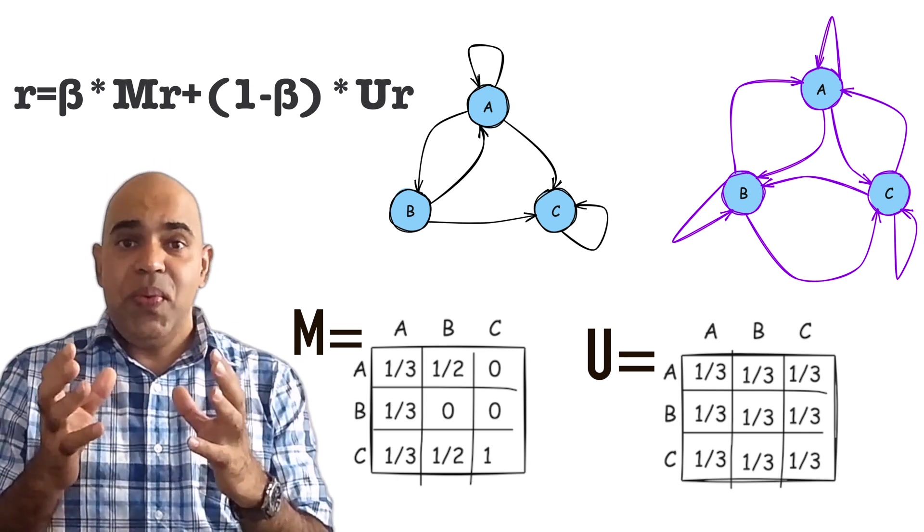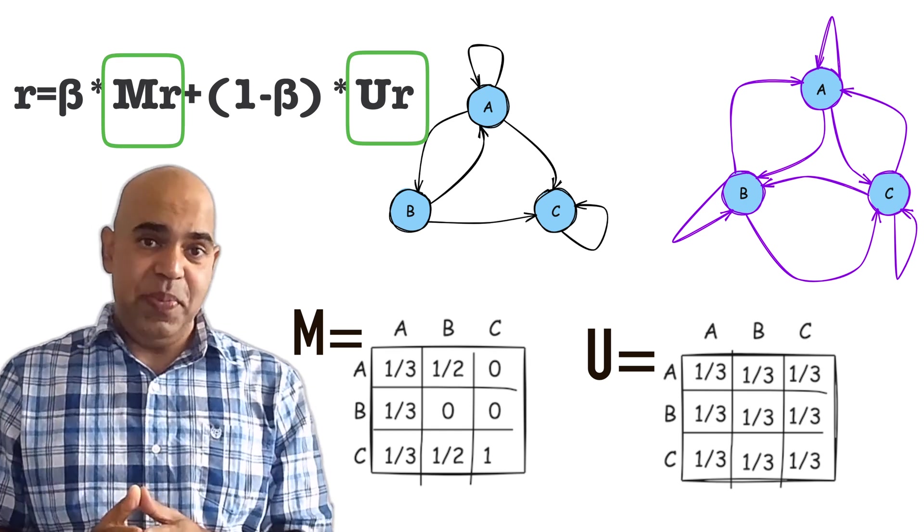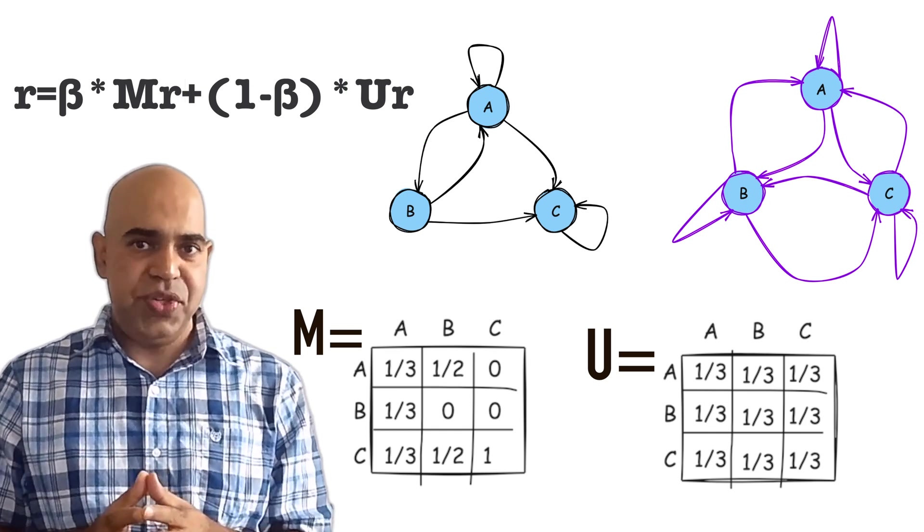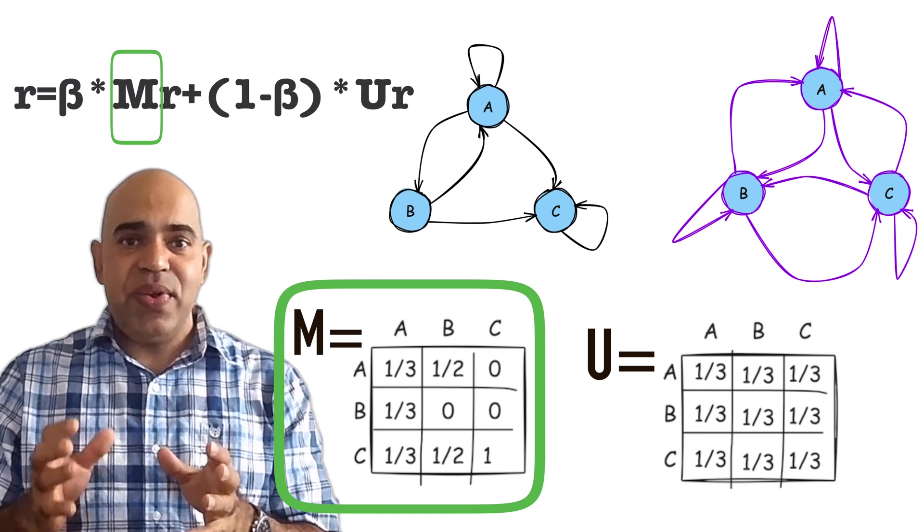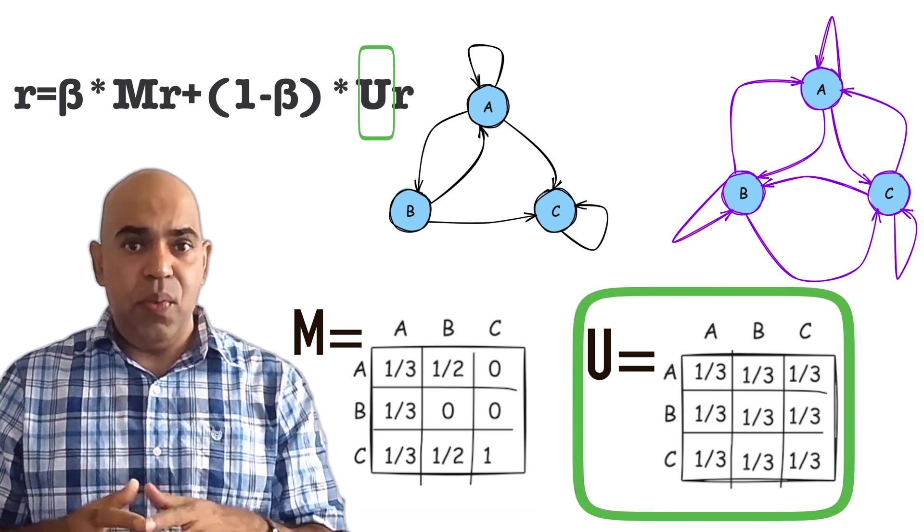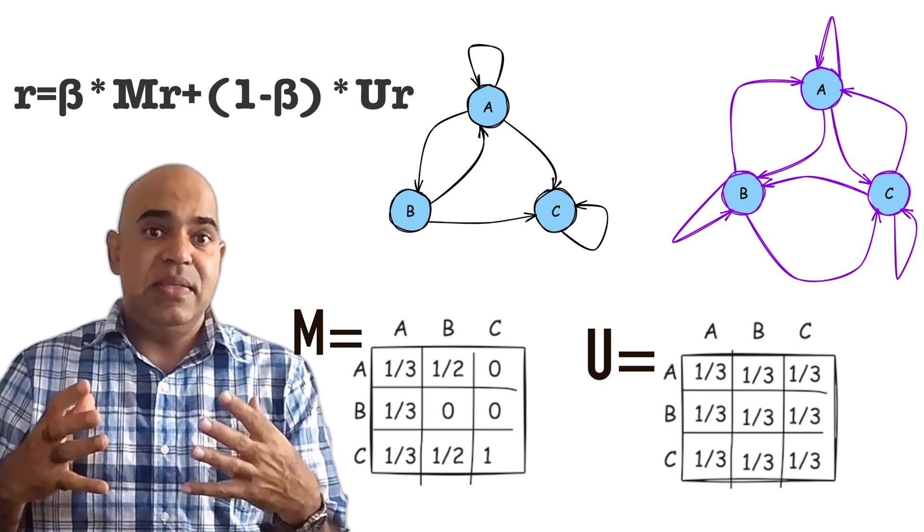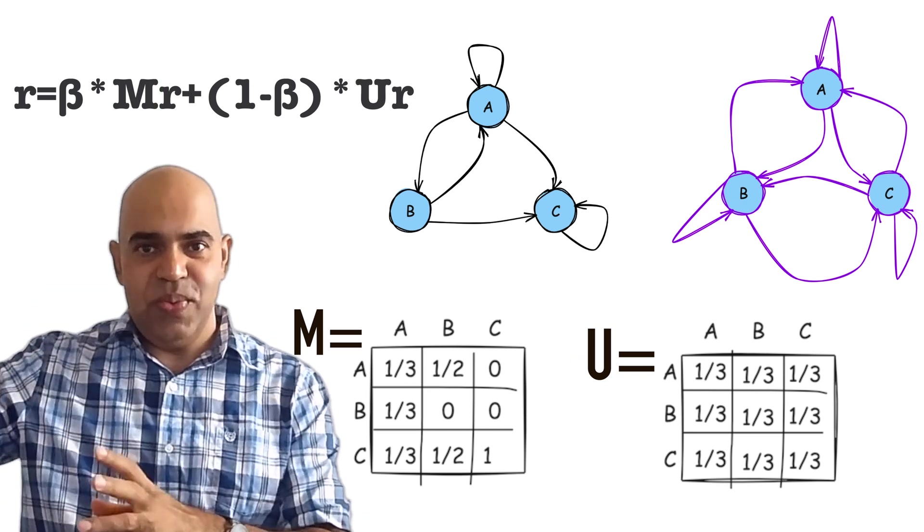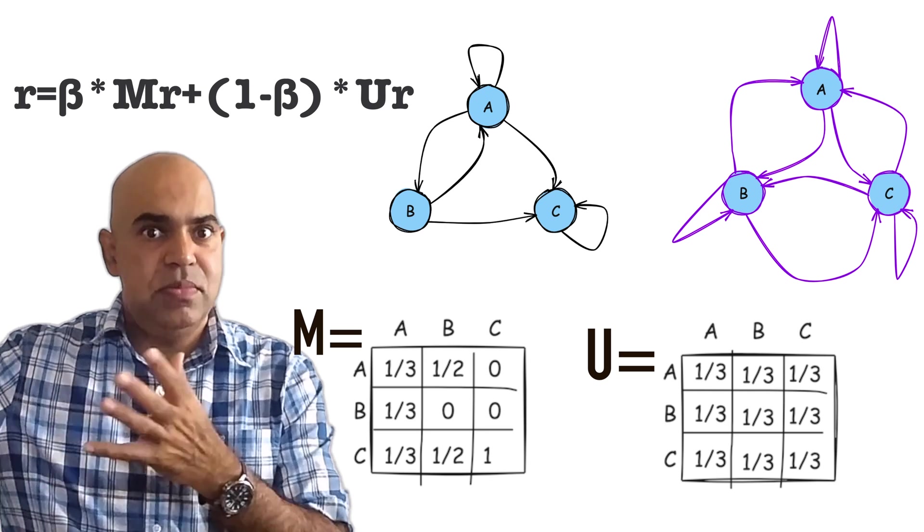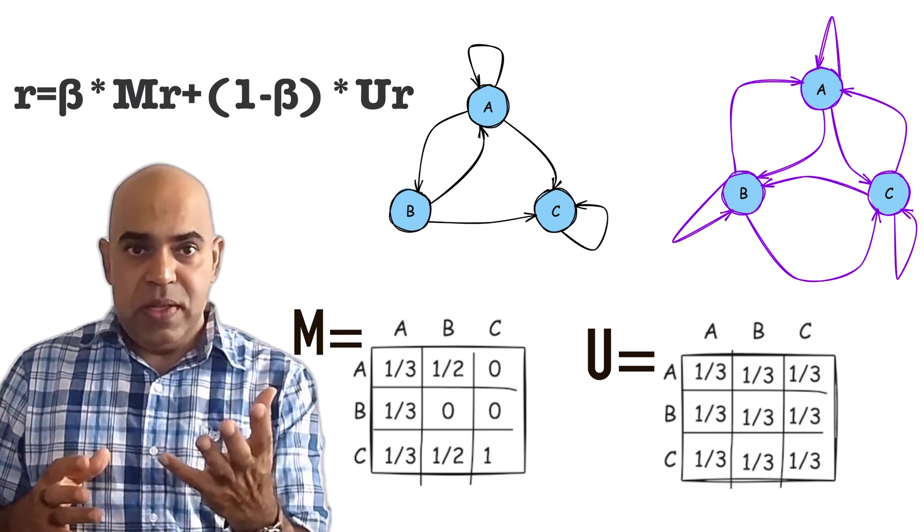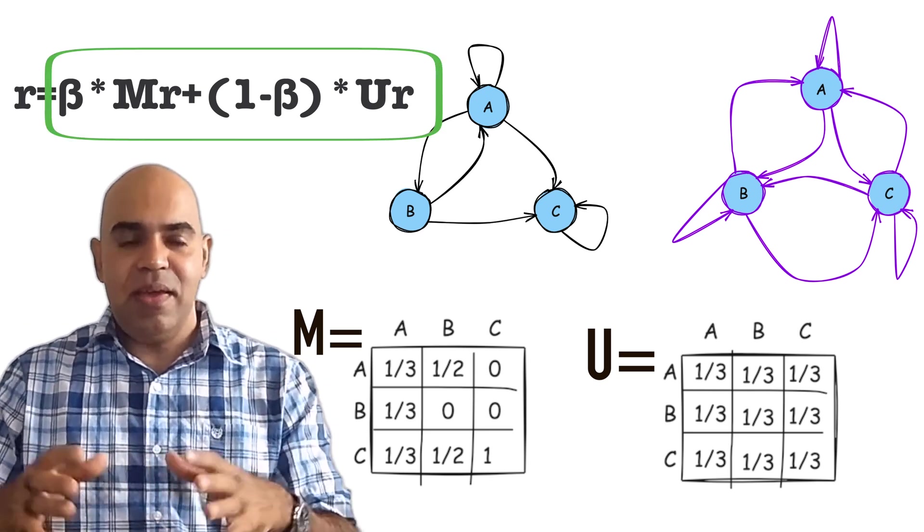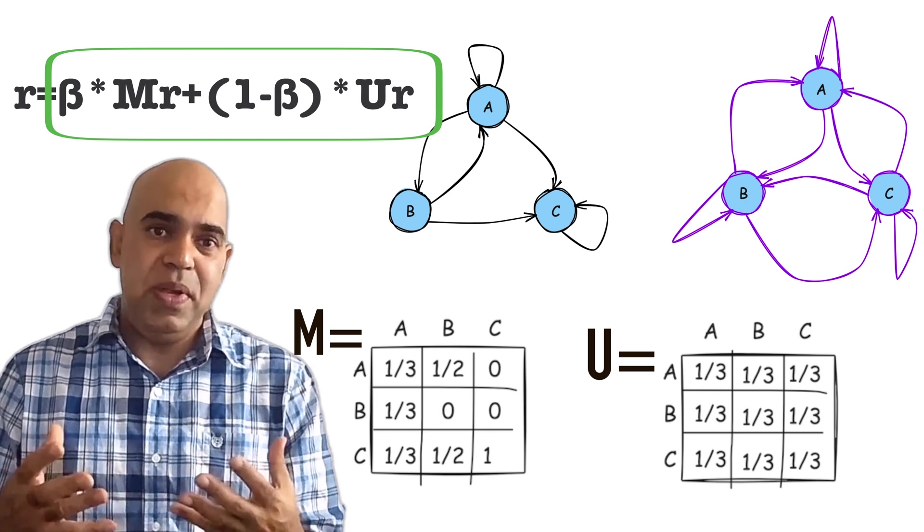There is a caveat. We have two matrix multiplications now in each iteration. Remember, this matrix M and this matrix U are huge. Each of these matrices is number of websites in the world times number of websites in the world big. Now we will check if we can make this part of the equation a bit faster.